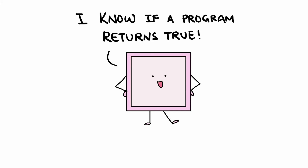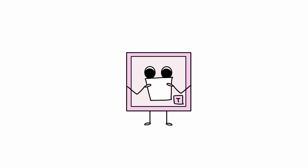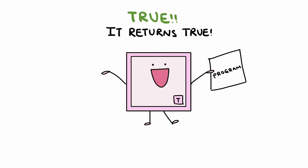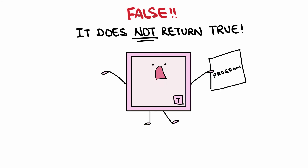We now show the reduction. This new program, let's call it T, will take a program as input and return true if the program returns true, or return false if the program does not return true. And when it does not return true, it may either be because the program returned false, or the program simply never stops.